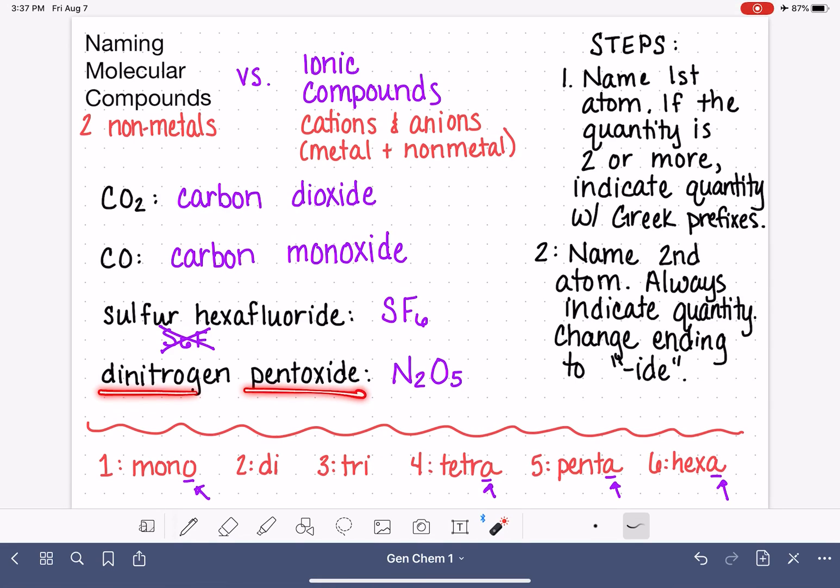And again, the only way that sometimes students mess this up is just by being like di, nitrogen, pentoxide. No, that's not how it goes. So we do have to do a little bit of flip-flopping the position of the number in the name versus the position of the number in the formula, but you guys can totally handle that.